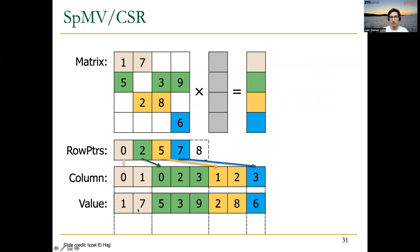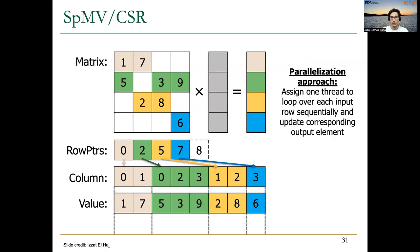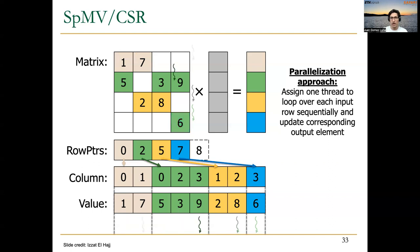For SpMV parallelization with CSR, the typical approach is to assign different threads to different rows. Each thread is in charge of computing the partial product and accumulation for the elements of one row with the input vector. In every iteration, the thread reads one element of the matrix, then reads the corresponding element of the vector using the column index, performs the partial multiplication, and accumulates. This continues for the next element and so on.